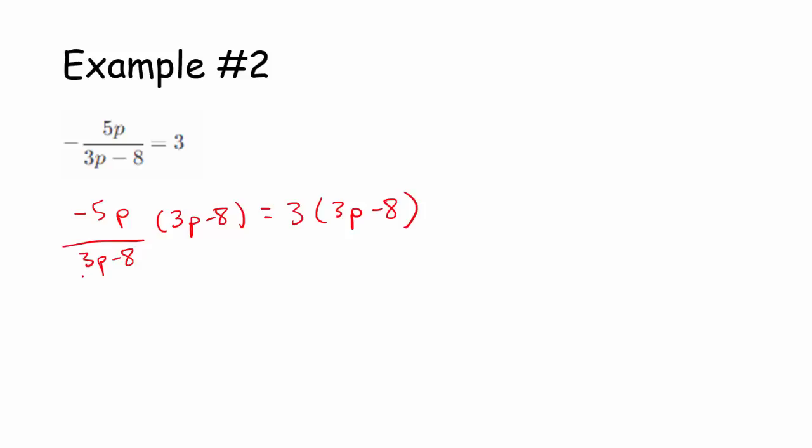And notice here that 3p minus 8 and that 3p minus 8 would cancel. That's with negative 5p equals, again, distributive property, 9p minus 24. I want all of the terms with p on the left-hand side of the equation. I'll subtract 9p from both sides.